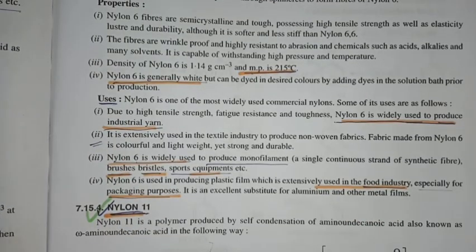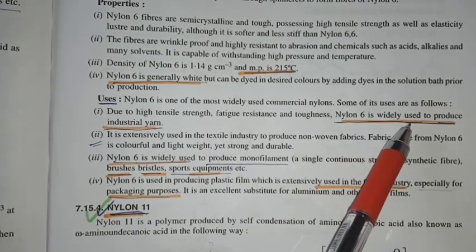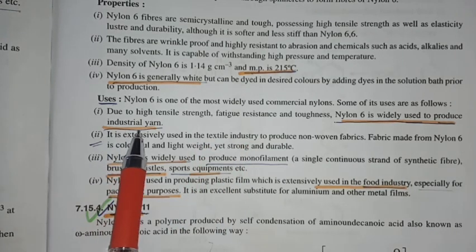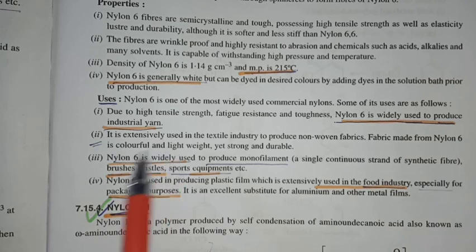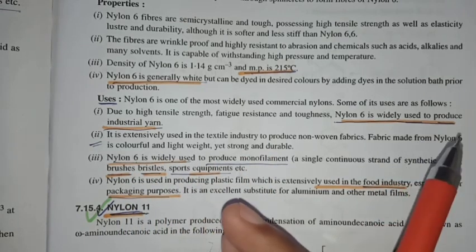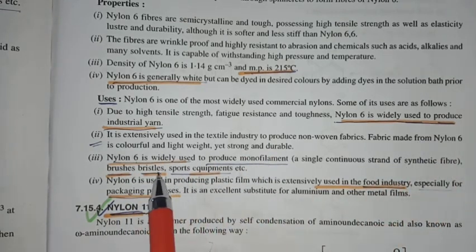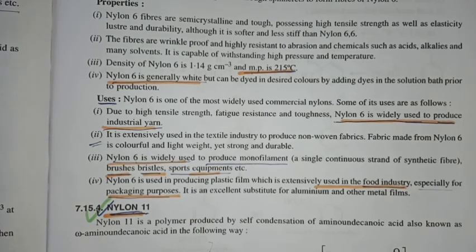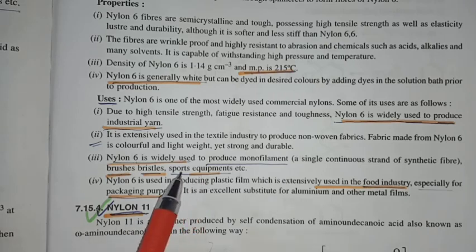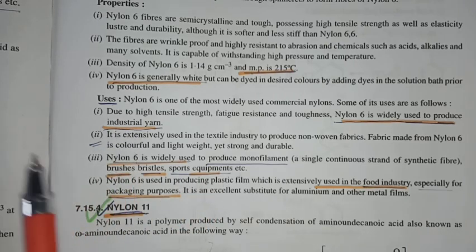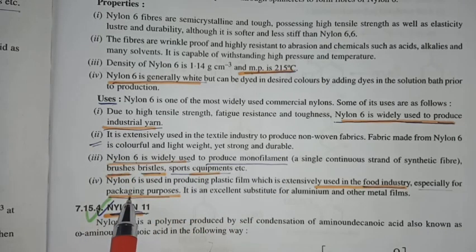Uses, we will see that nylon 6 is widely used to produce industrial yarn. It is widely used to produce the monofilaments like brushes and bristles, which we have in nylon 6,10. It is also used in bristles and sports equipment. It is also used in packaging purpose and other food industries.